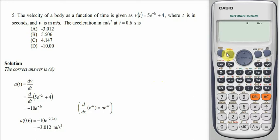And let's use this calculator to differentiate this expression. Here d over dt of 5e to the power minus 2t plus 4. Let's do the differentiation for this function v of t when the t equals to 0.6 seconds and the differentiation is going to be done with respect to the time.